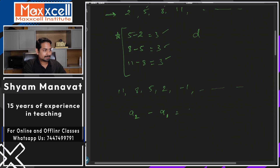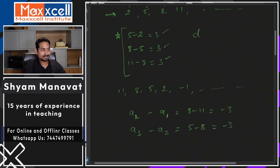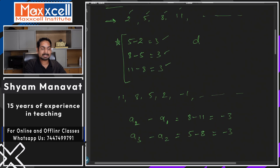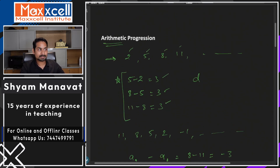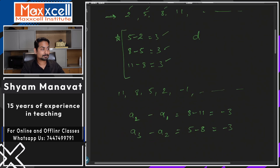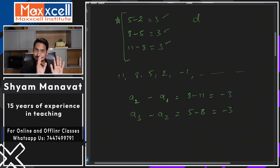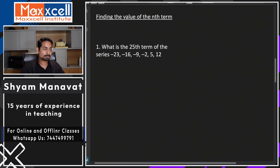So A2 minus A1, that is 8 minus 11, will be minus 3. A3 minus A2 — the difference between two consecutive terms — that will be 5 minus 8, which is again minus 3. So the common difference is the next term minus the previous term. I hope you understood how to identify whether a progression is arithmetic or not. Keep watching — we have upcoming lectures where we are going to discuss harmonic progression, geometric progression, and special series also.